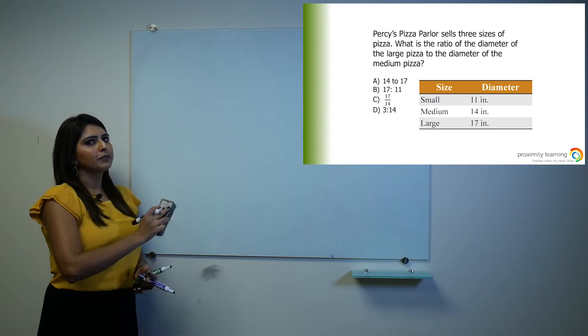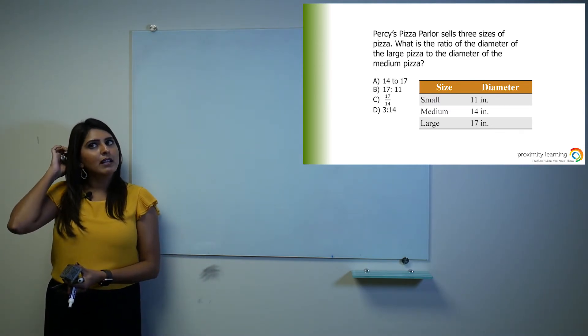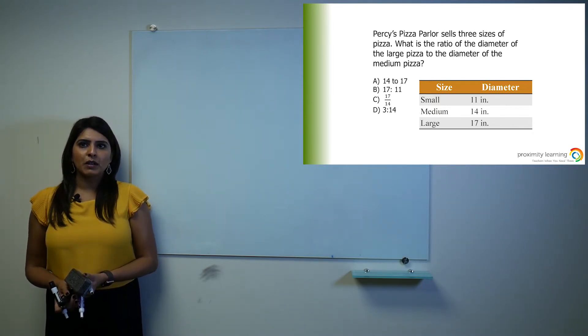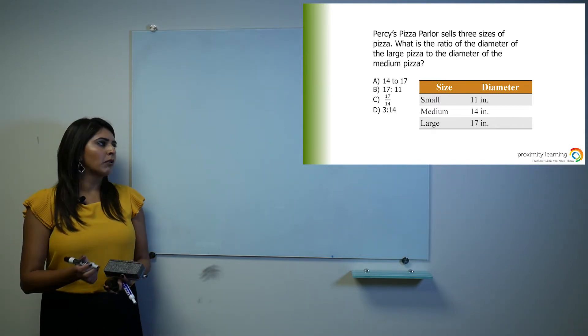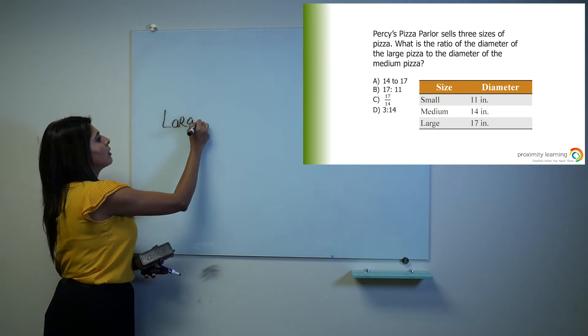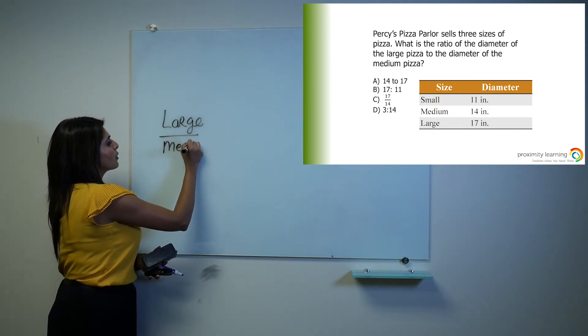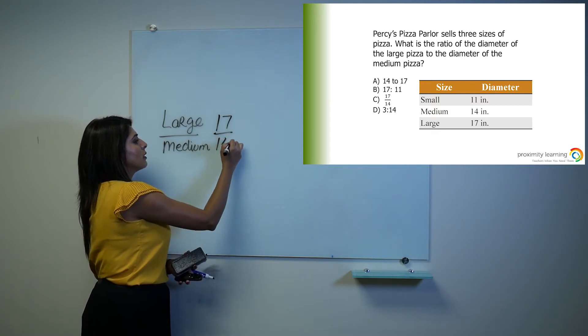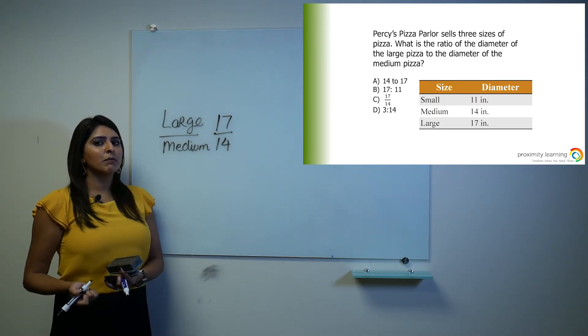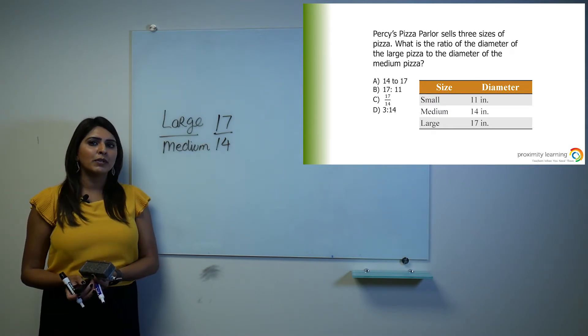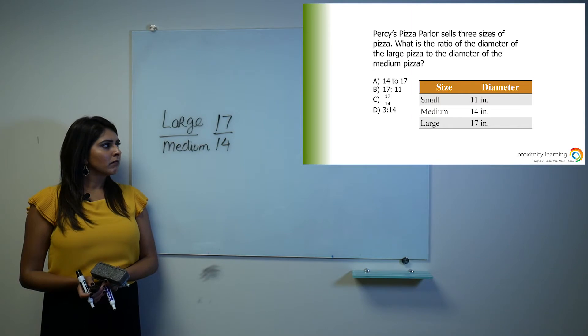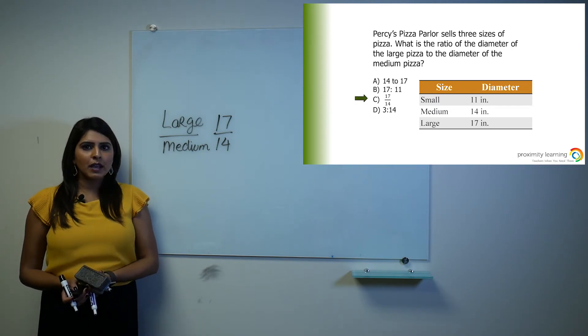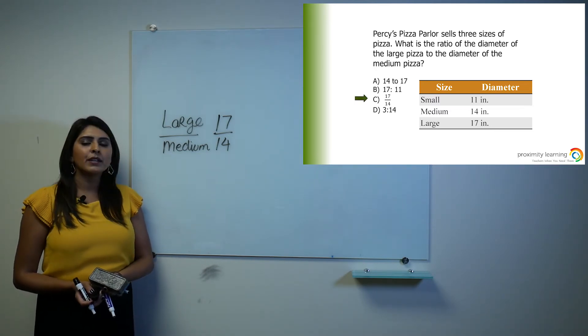Here is another practice problem, multiple choice question. Percy's Pizza Parlor sells three sizes of pizza. What is the ratio of the diameter of the large pizza to the diameter of the medium pizza? So in your table, you have been given all that information. We are trying to find the ratio of the large pizza to the medium. So I want you to take a look at 17 over 14. Can you simplify that? Is there a number that you can divide both 17 and 14 with? Probably not. So that will leave us with answer choice C as our correct answer, which is 17 over 14.